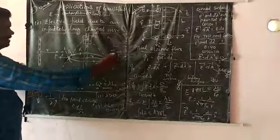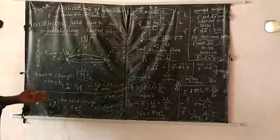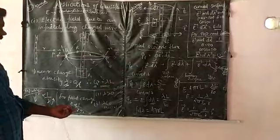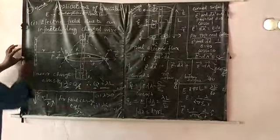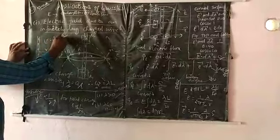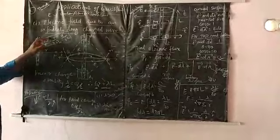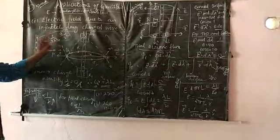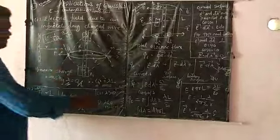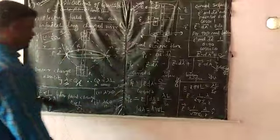For a positive point charge, the electric field varies as 1 by R squared. For an infinitely charged wire, E varies as 1 by R. So the electric field due to an infinite wire decreases more slowly with distance compared to a point charge.